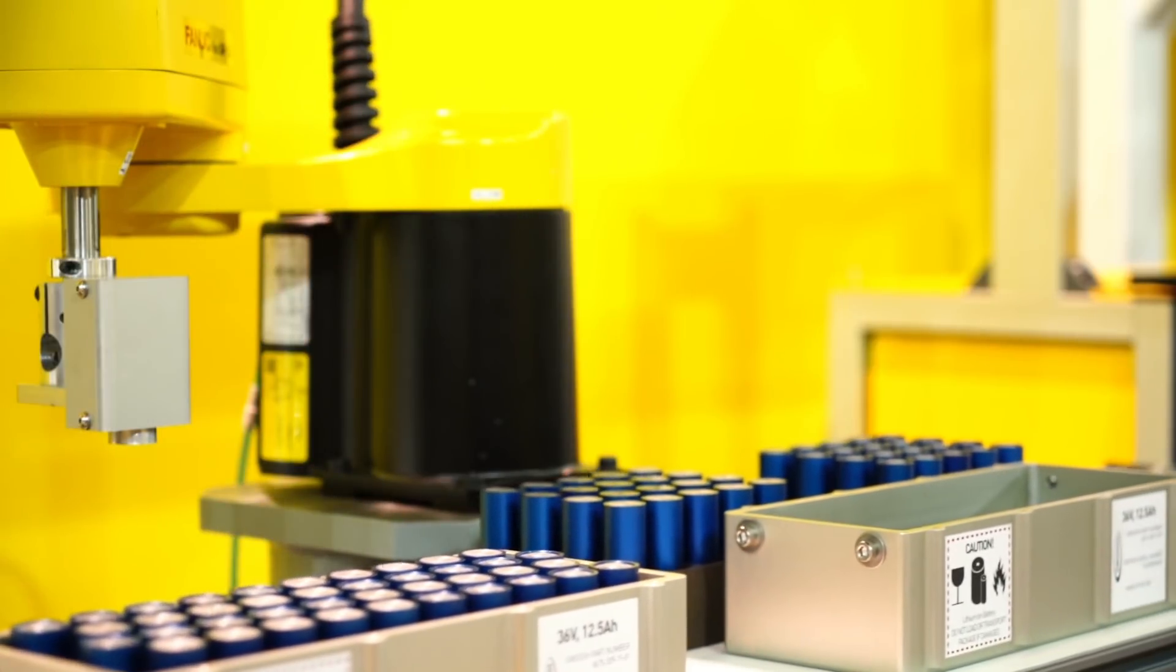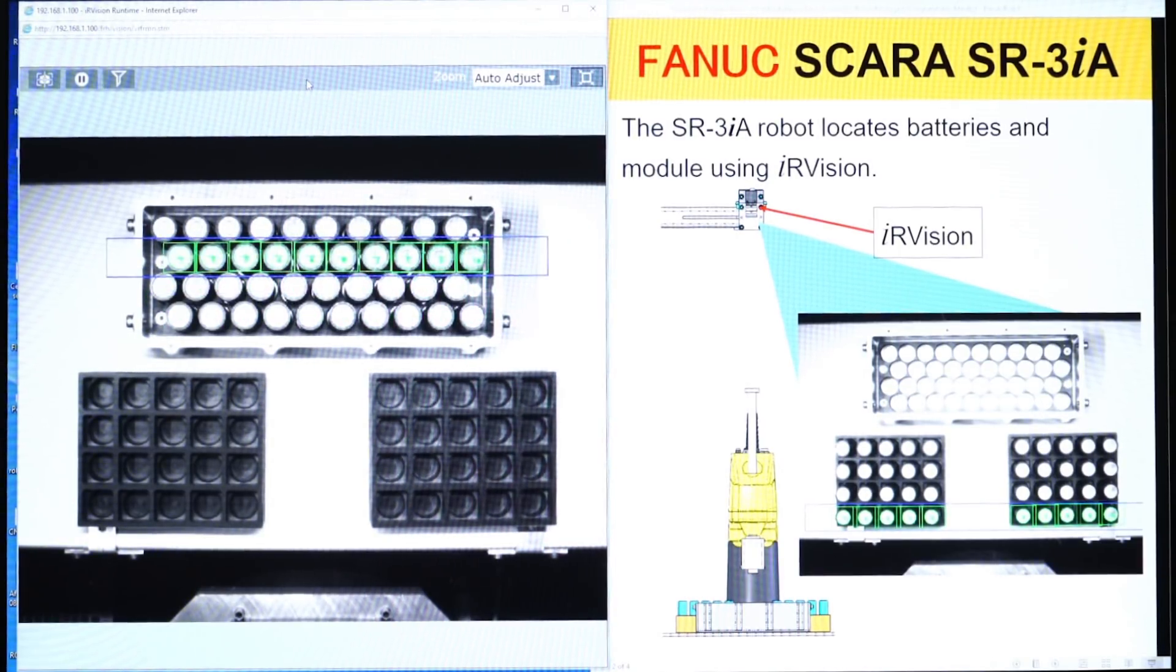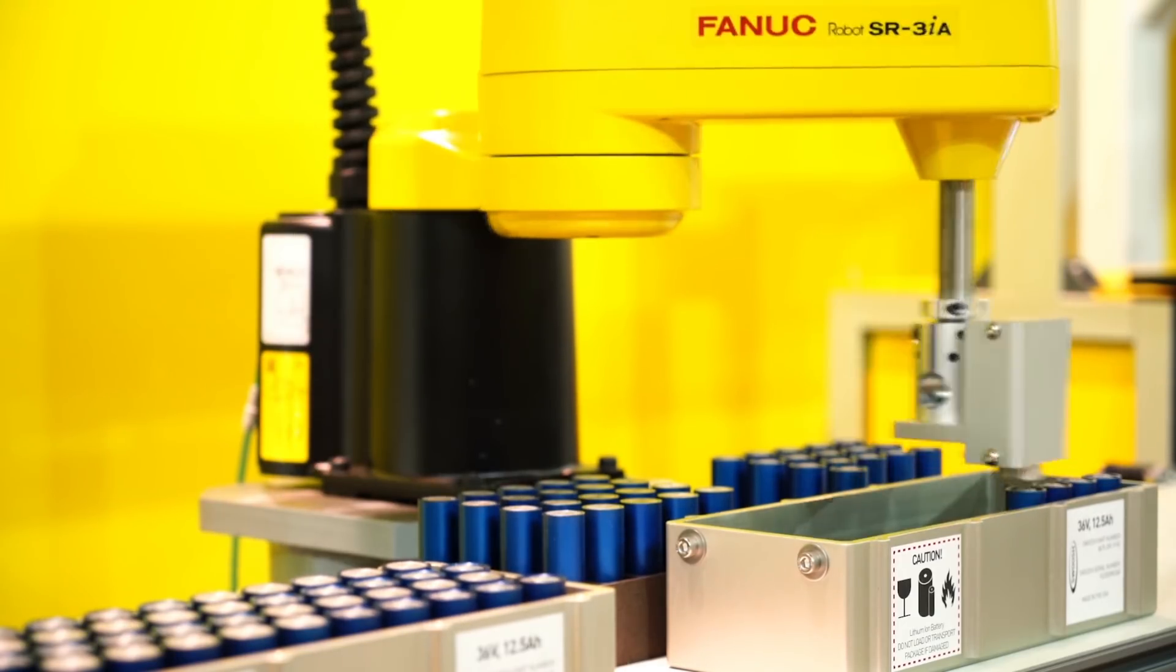The robot then picks the anode and cathode-oriented batteries from the boxes and places them in their proper places within the module at very high speeds.